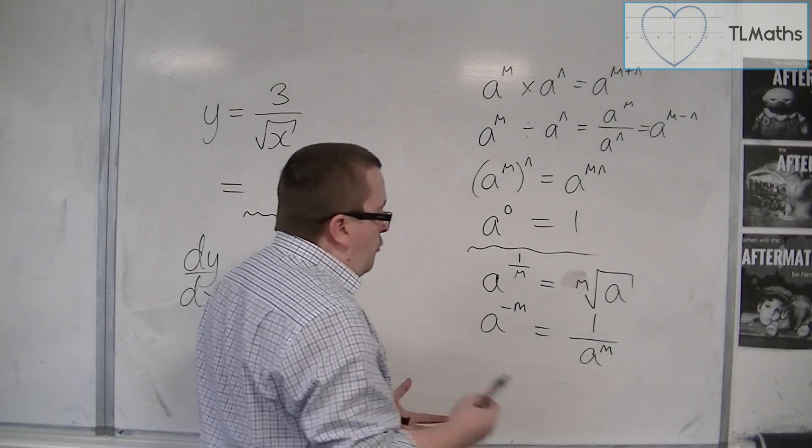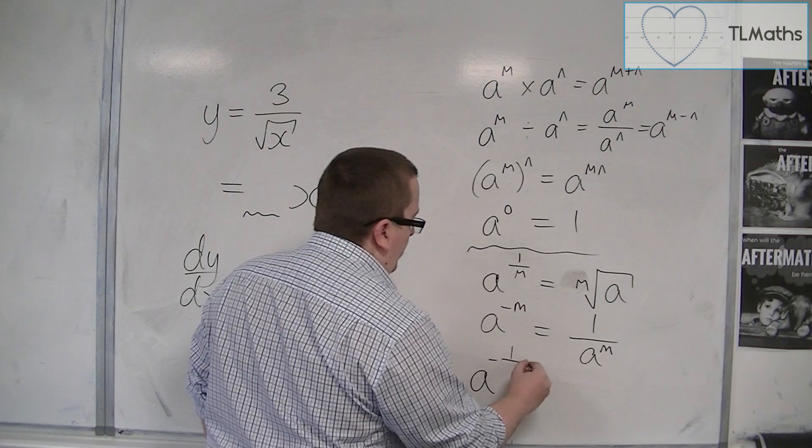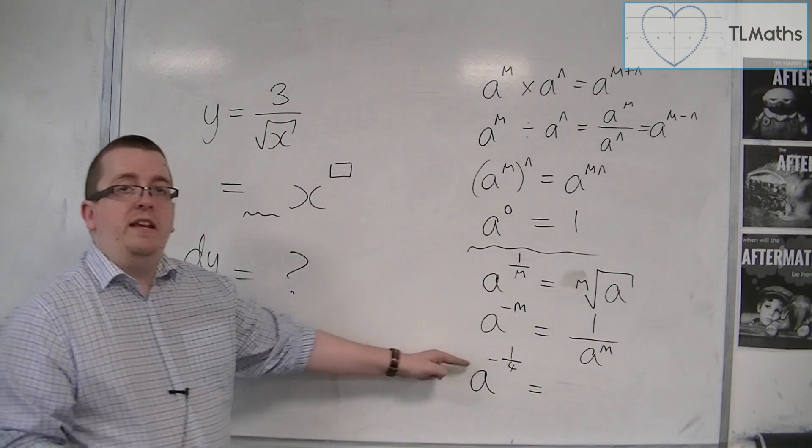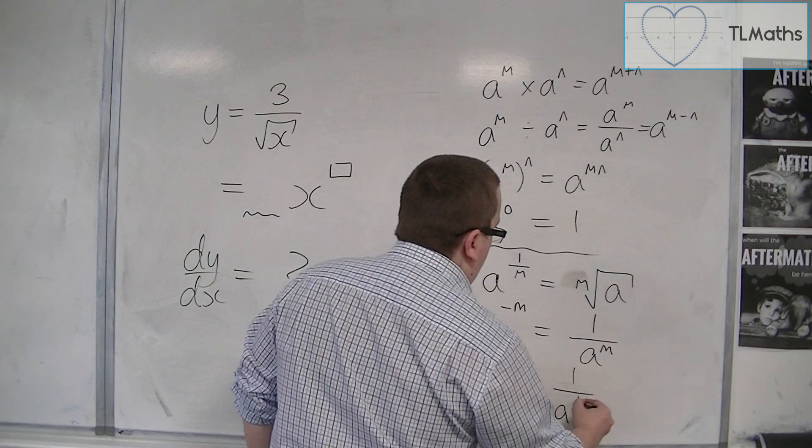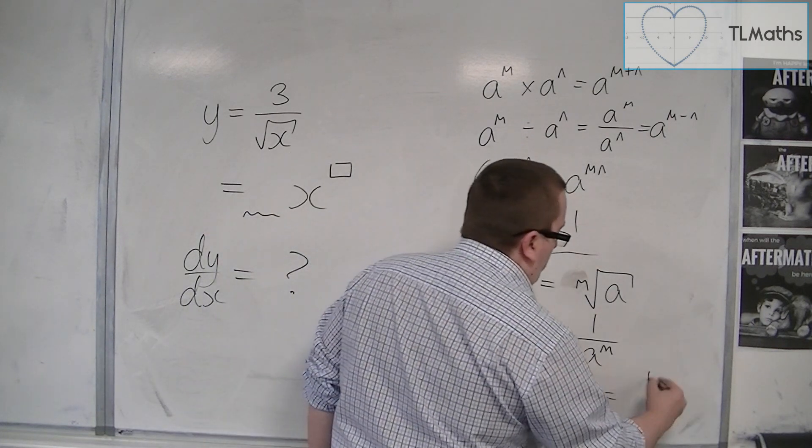So for example, if you had a to the minus a quarter, then the minus sign is telling you that it is 1 over. And so that's 1 over a to the quarter. And the a to the quarter means the fourth root of a.